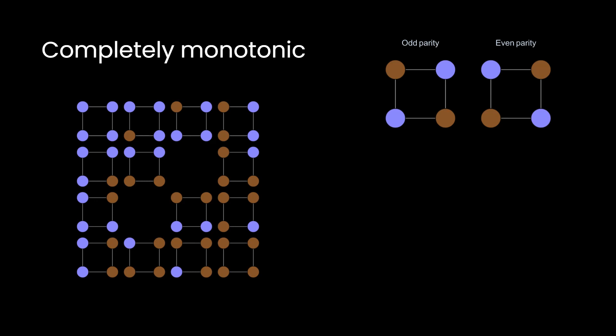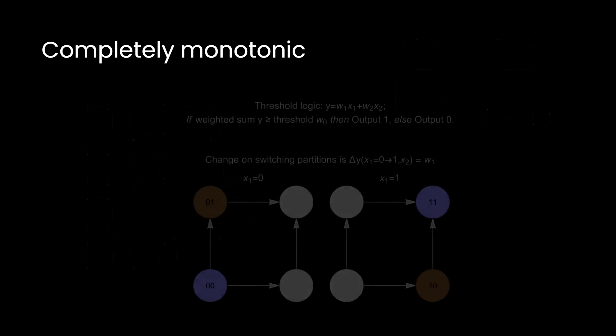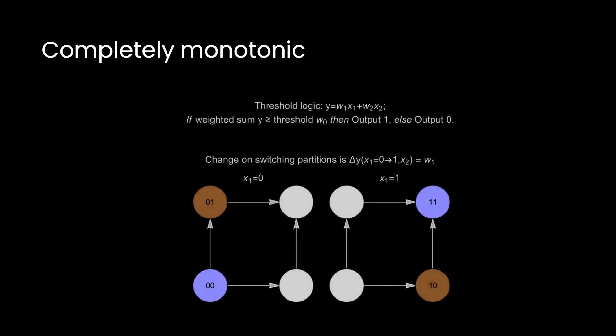When is a function completely monotonic? Loosely speaking, it is when all possible parallel partitions of the function are compatible with threshold logic. This concept is more easily understood by looking at a counter example. In the odd parity function, the x1 equals zero partition and the x1 equals one partition